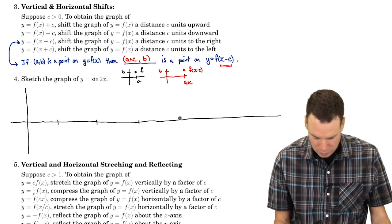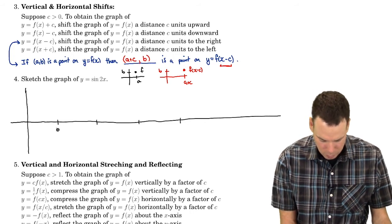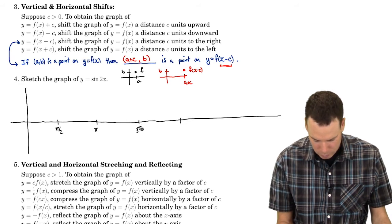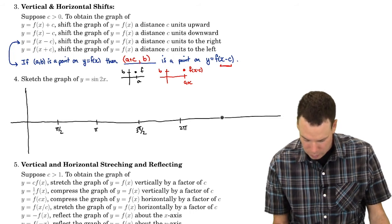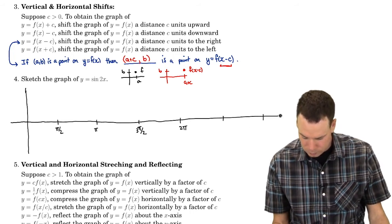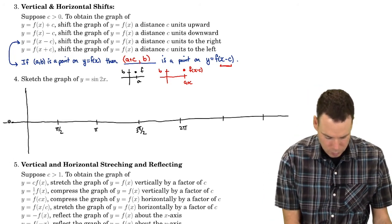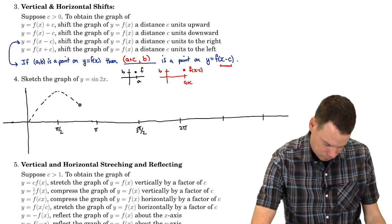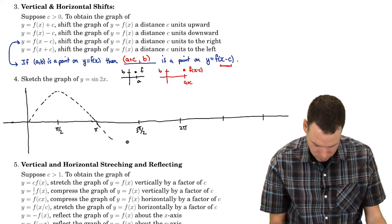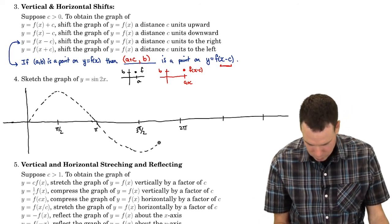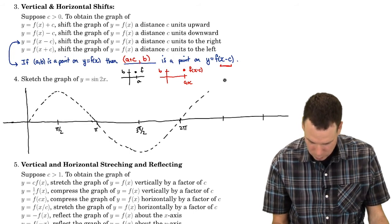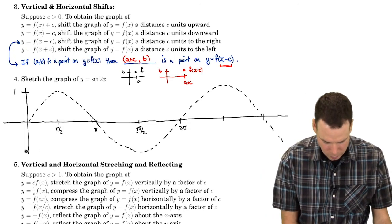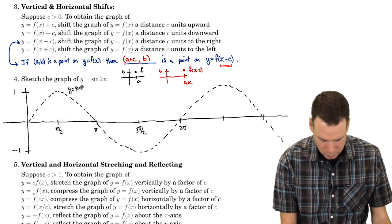We'll start with sine of x, marking pi/2, pi, 3pi/2, and 2pi on the x-axis, continuing in both directions. Sine starts at 0, goes up to 1, back down to 0, down to negative 1, and back to 0. So that's y equals sine of x, with amplitude 1 and negative 1.